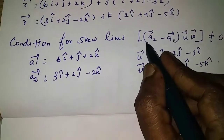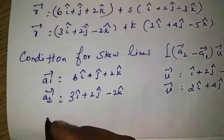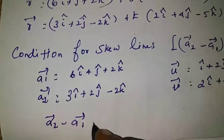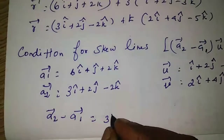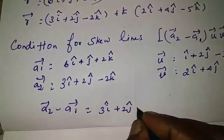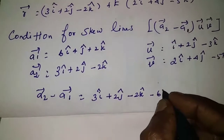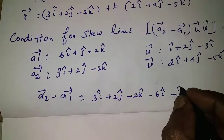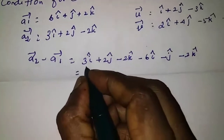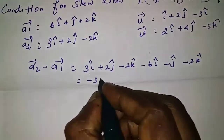To prove scalar triple product of (a2 minus a1), u vector, v vector is not equal to 0. First, find a2 minus a1 vector: a2 is 3i-cap plus 2j-cap minus 2k-cap, minus a1 which is 6i-cap plus j-cap plus 2k-cap. The result is 3i minus 6i equals minus 3i-cap.